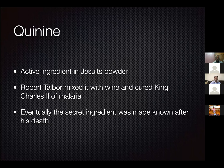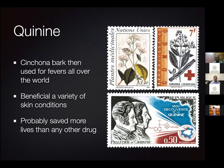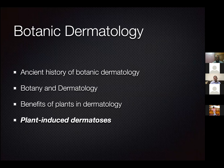Cinchona bark then became used to treat fevers all over the world. Its benefit to dermatologists is that synthetic analogues — hydroxychloroquine, chloroquine, and quinine itself — are used to treat a variety of inflammatory skin conditions. Malaria affects 500 million people per year, of which 2 million die; quinine and its derivatives have probably saved more lives than any other drug in mankind. That is commemorated on stamps all over the world — all originating from a humble tree.